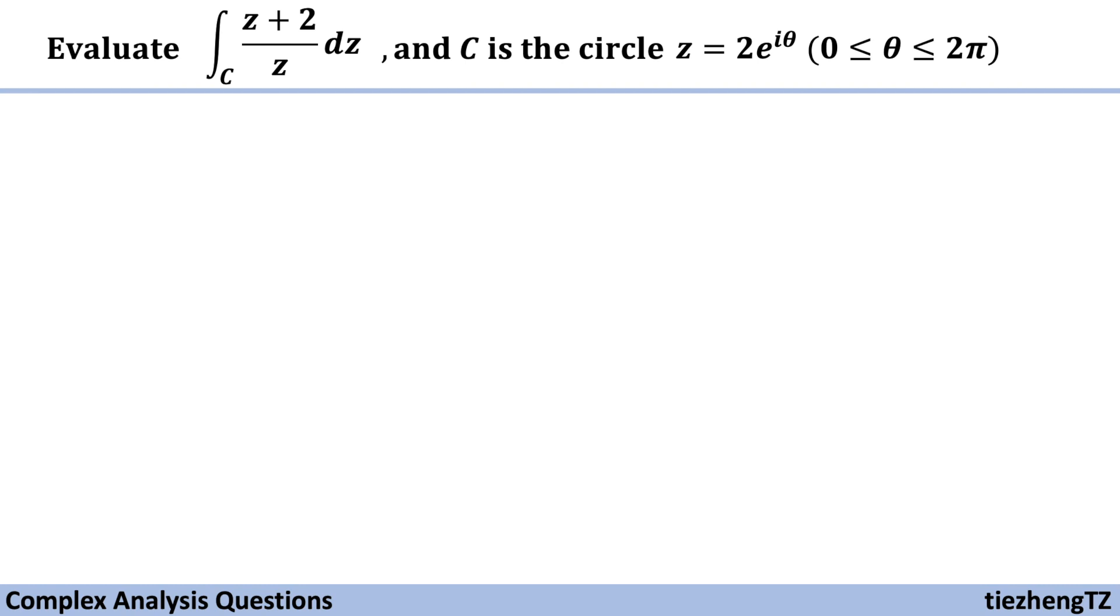This question is to evaluate the integral z plus 2 over z dz on the circle z equals 2 times e to the power of i theta, where theta is from 0 to 2 pi.